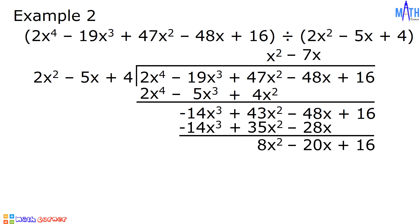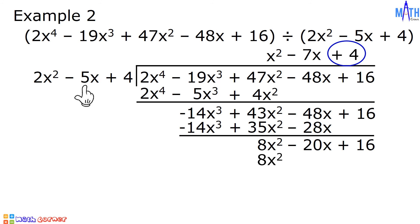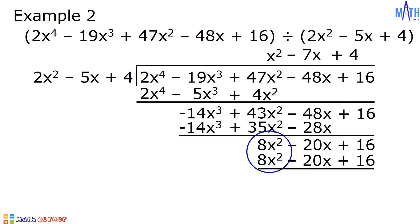Let us repeat the process. 8x squared divided by 2x squared is equal to positive 4. Positive 4 times 2x squared equals 8x squared. 4 times negative 5x equals negative 20x. 4 times 4 equals positive 16. Let us subtract: 8x squared minus 8x squared equals 0. Negative 20x minus negative 20x equals 0. And 16 minus 16 equals 0. Since the remainder is equal to 0,